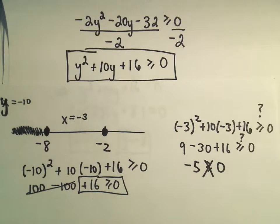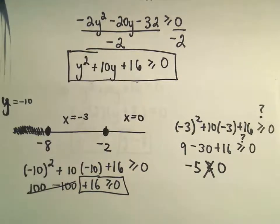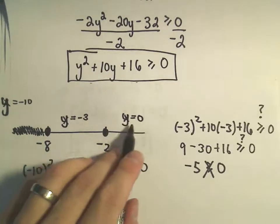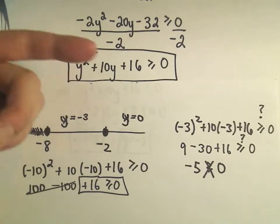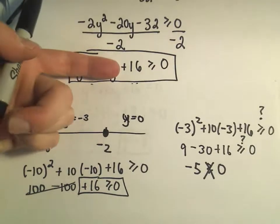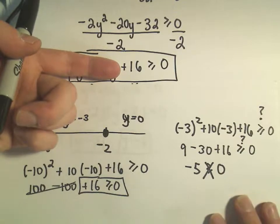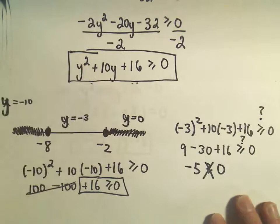Now I'll take something just bigger than negative 2 — I'll use y equals zero, which makes the arithmetic easy. If we plug in y equals zero, we'll get zero squared plus 10 times zero, which is zero, plus 16. Since 16 is greater than or equal to zero, that inequality is true. So anything bigger than negative 2 also works.